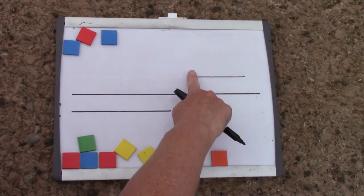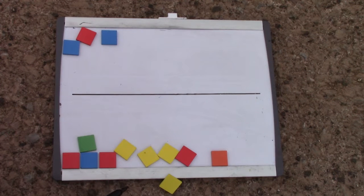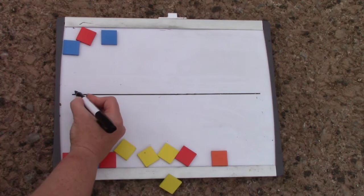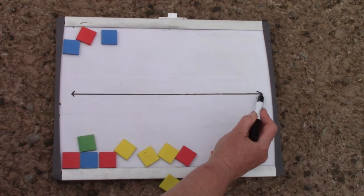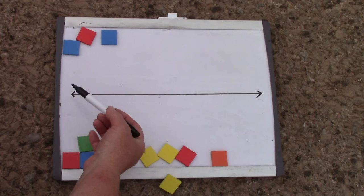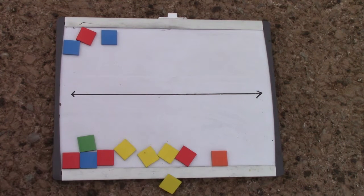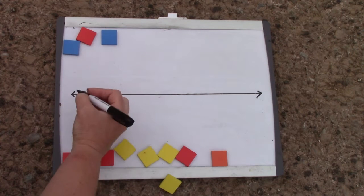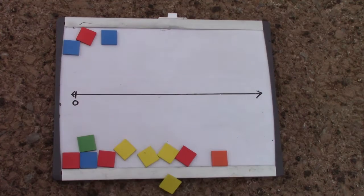Today we're going to be making a number line and I am just going to use my very longest line. Number lines can help us in math, especially with adding and subtracting. And I'm going to make my number line look like a big long arrow on both sides. And I'm going to start my number line over here with a zero.